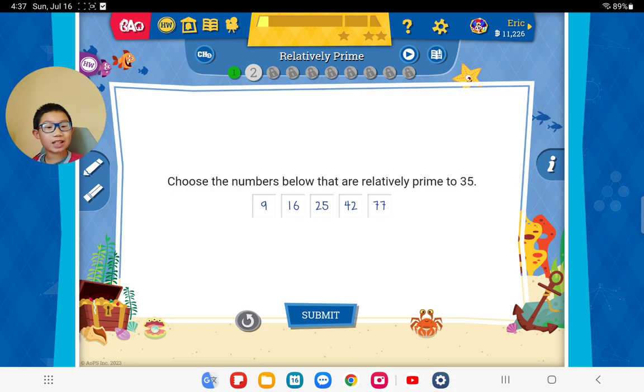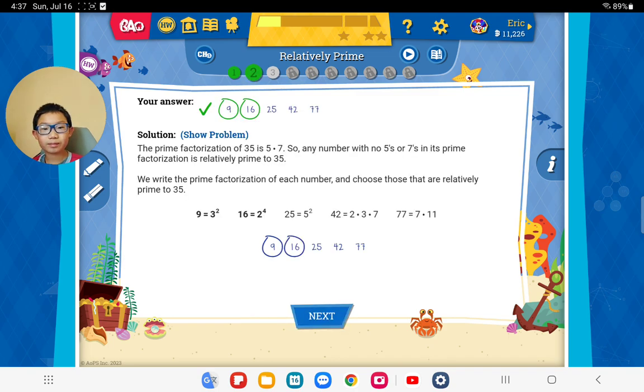35. Make sure that they don't have 5 and 7. 5 and 7. Okay. This one has 5. This one has 7. This one also has 7. Good job. Good job. Yes.